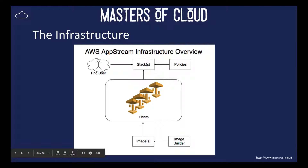To give you an idea of what the infrastructure looks like, here's a diagram — I'm connecting over the internet with my HTML5-enabled browser and connecting to a stack in AWS AppStream. That stack will have some policies assigned to it, and those policies will be things like don't allow cut and paste, or set up users when they connect to a fleet to have an S3 home drive so that settings persist across sessions.